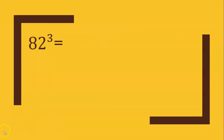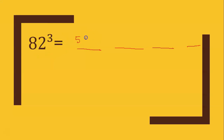Next is 82 cubed. The first step: we have 4 parts. The first part is 8 cubed. 8 cubed is 512. 2 cubed is 8. We multiply all numbers: 8 × 2 × 3 = 48.